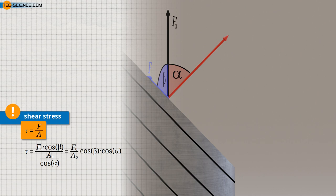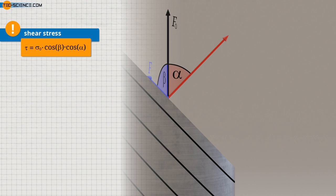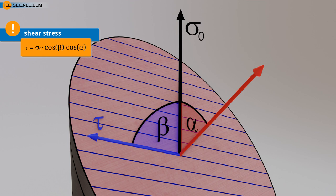In this equation, the quotient of the force F0 and the cross-sectional area A0 corresponds to the external normal stress sigma zero. The shear stress acting in the slip system can therefore be determined using the angles alpha and beta. This equation is also called Schmid's Law. The geometry factor marked in red is often referred to as the Schmid factor M. If a certain critical resolved shear stress is exceeded in a slip system — namely in the slip system with the largest Schmid factor — the planes begin to slip and the dislocations begin to migrate through the crystal.